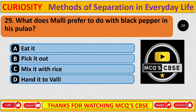Question: What does Wali prefer to do with black pepper in his pulao? Correct answer is B: Pick it out.